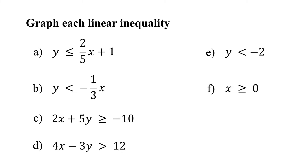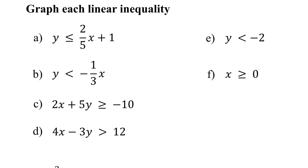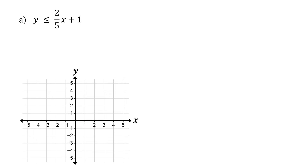In this lesson, you will learn how to graph linear inequalities in two variables. Graphing linear inequalities involves two simple steps. The first step is to graph the boundary line. The second step is to shade the solution region to show all points that satisfy the inequality.